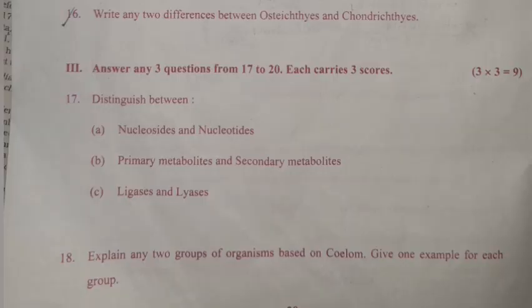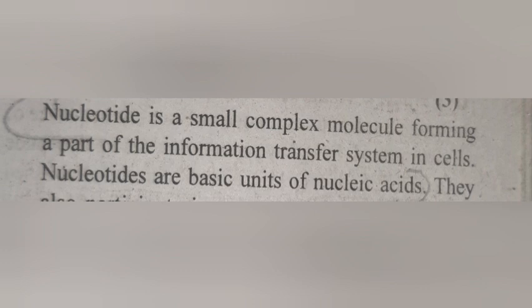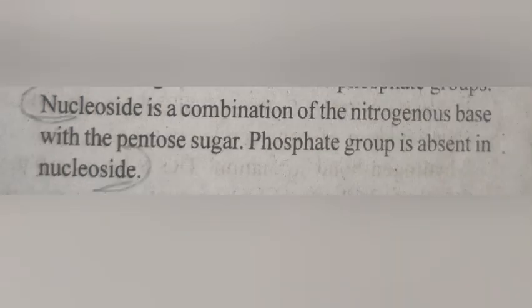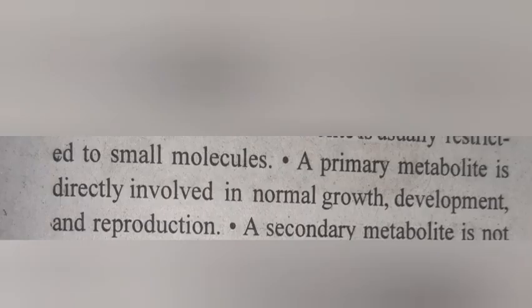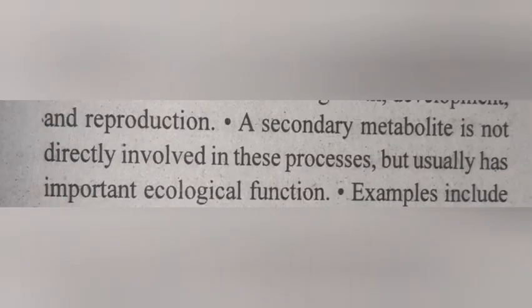Answer any three questions from 17 to 20. Each carries three scores. Question 17: Distinguish between A. Nucleosides and nucleotides. Answer: Nucleotide — a small complex molecule forming part of the information transfer system in cells; nucleotides are basic units of nucleic acids. Nucleoside — a combination of the nitrogenous base with the pentose sugar; phosphate group is absent in nucleoside.